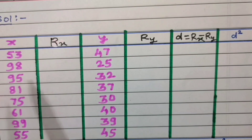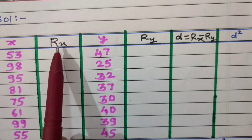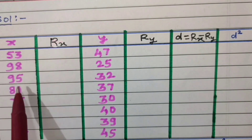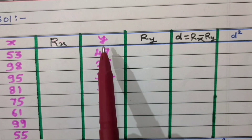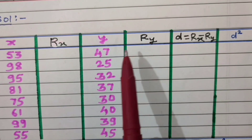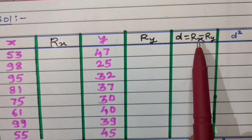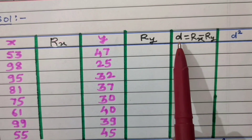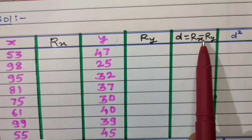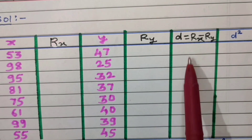The table will have six columns: first, values of variable x; second, ranks of values of variable x; third, values of variable y; fourth, ranks of values of variable y; fifth, the difference d = Rx minus Ry between corresponding ranks; and sixth, d² — the square of each value from column d.